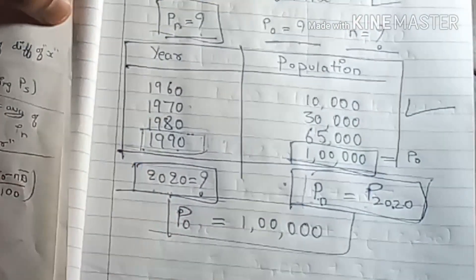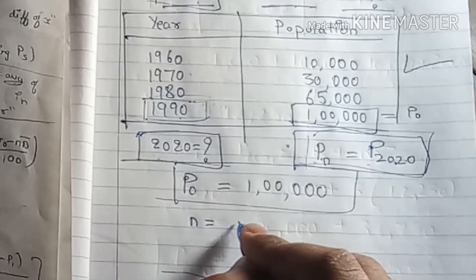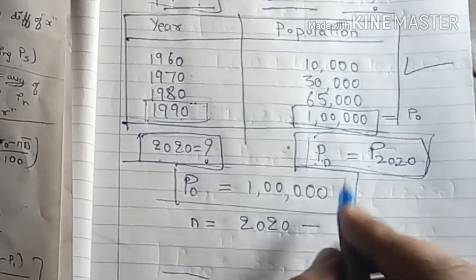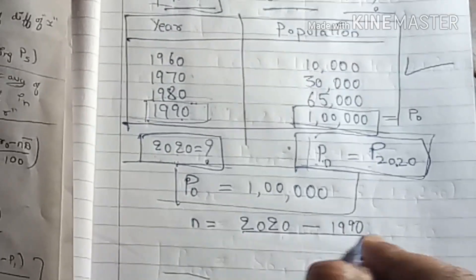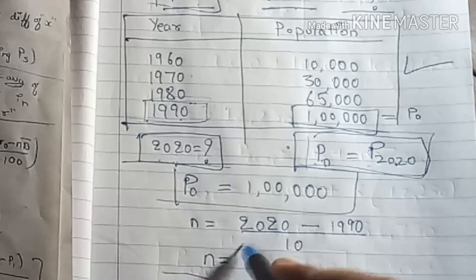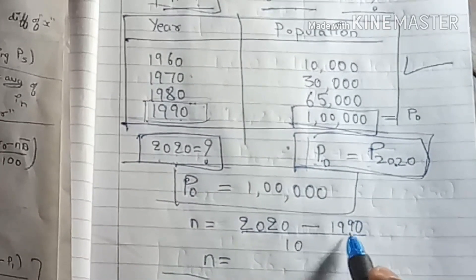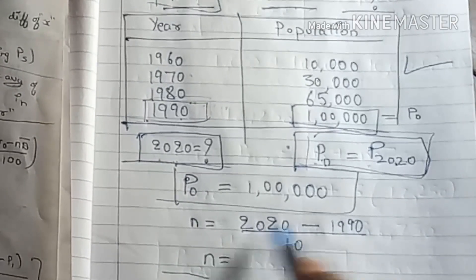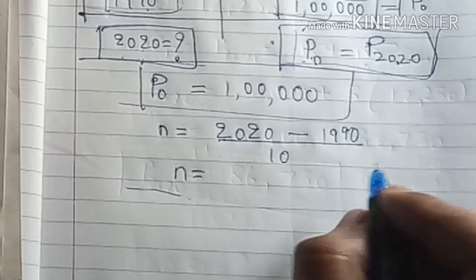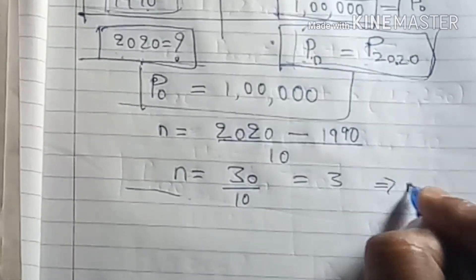Now, what is N? N is calculated as: the year we are forecasting (2020) minus the last known decade (1990), divided by 10. So 2020 − 1990 = 30, and 30 ÷ 10 = 3. Therefore, N = 3.